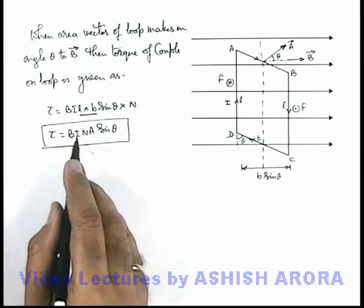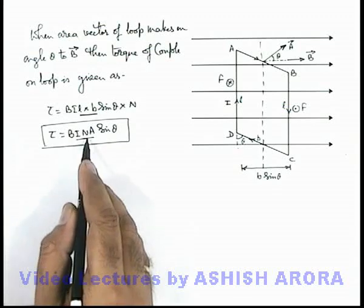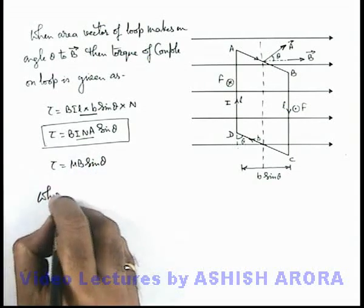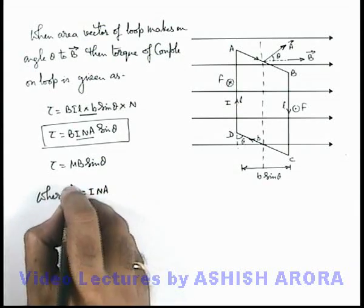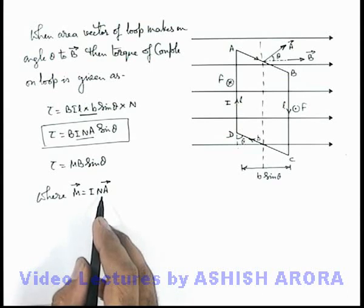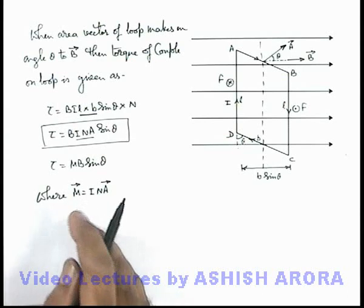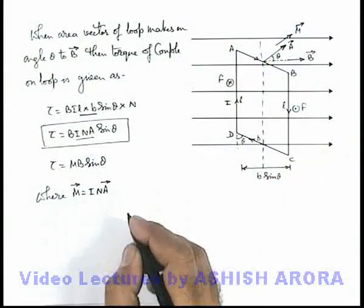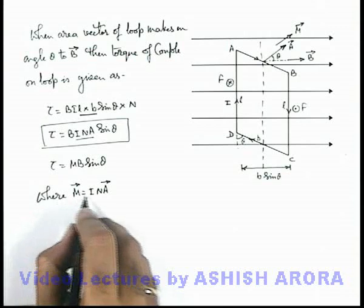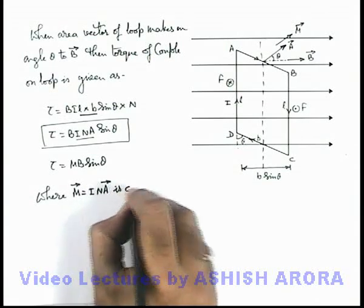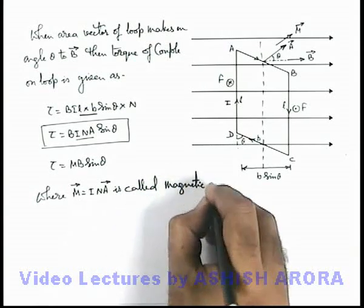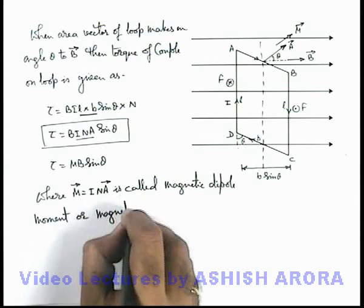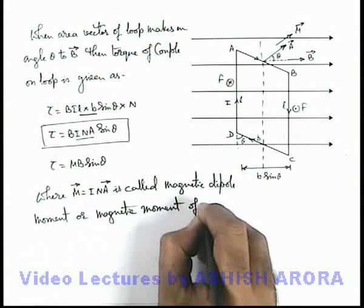Now in this situation, the constant term iNA can be replaced by a single constant m, so torque can be written as mB sinθ, where m is the product of current, number of turns, and area. This m is called the magnetic dipole moment, or magnetic moment, of the current carrying loop.